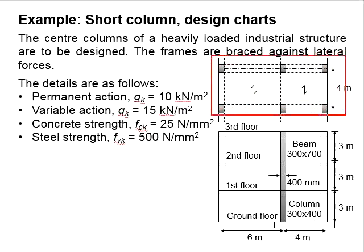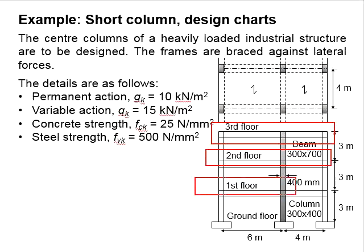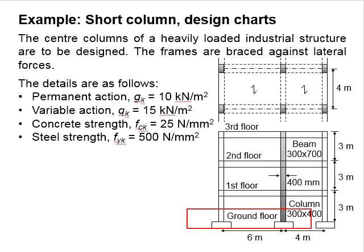This shows the key plane of the structures. The frame is 4 m spaced with each other. Each frame has 3 floors: from the ground floor, first floor, second floor and the third floor. The beam size is 300 times 700. The column size is 300 times 400. The column in this direction is 400 mm. This column is to be designed. The effective height is 3 meters for each story.